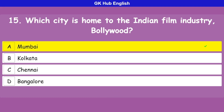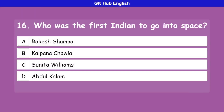Question 16: Who was the first Indian to go into space? Option A is Rakesh Sharma, option B is Kalpana Chawla, option C is Sunita Williams, option D is Abdul Kalam. Correct answer is Rakesh Sharma.